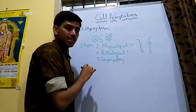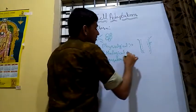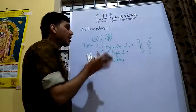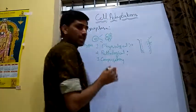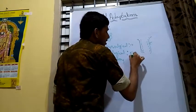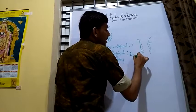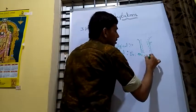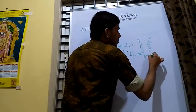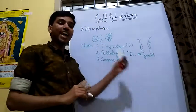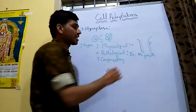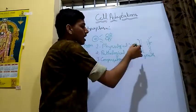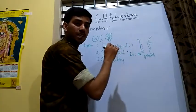In pathological hyperplasia, any disease conditions — due to any increased hormone secretion, for example increased growth hormone secretion — lead to gigantism by means of hyperplasia of the cells.